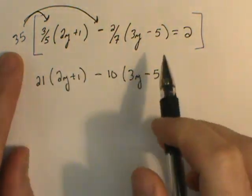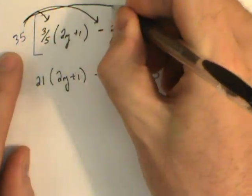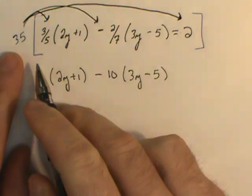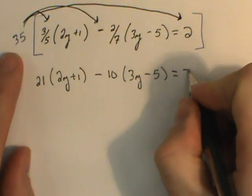And then most kids will forget to distribute to this 2. This is a third term, and so it has to be distributed. Remember, what you do on one side of the equation must be done to the other side. So 35 times 2 produces 70.